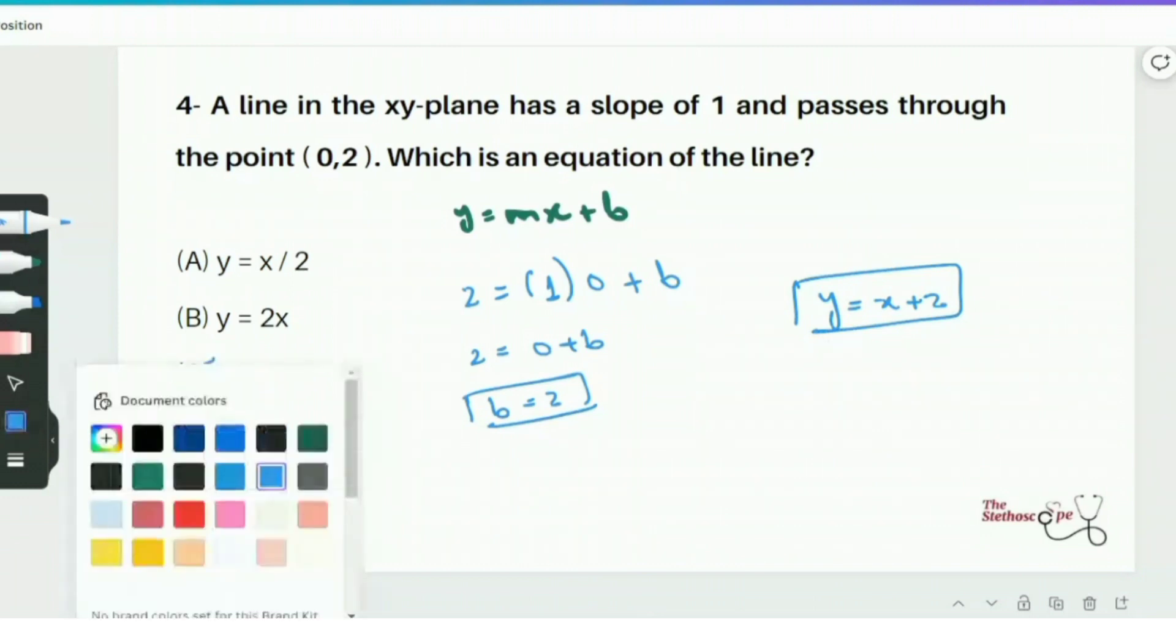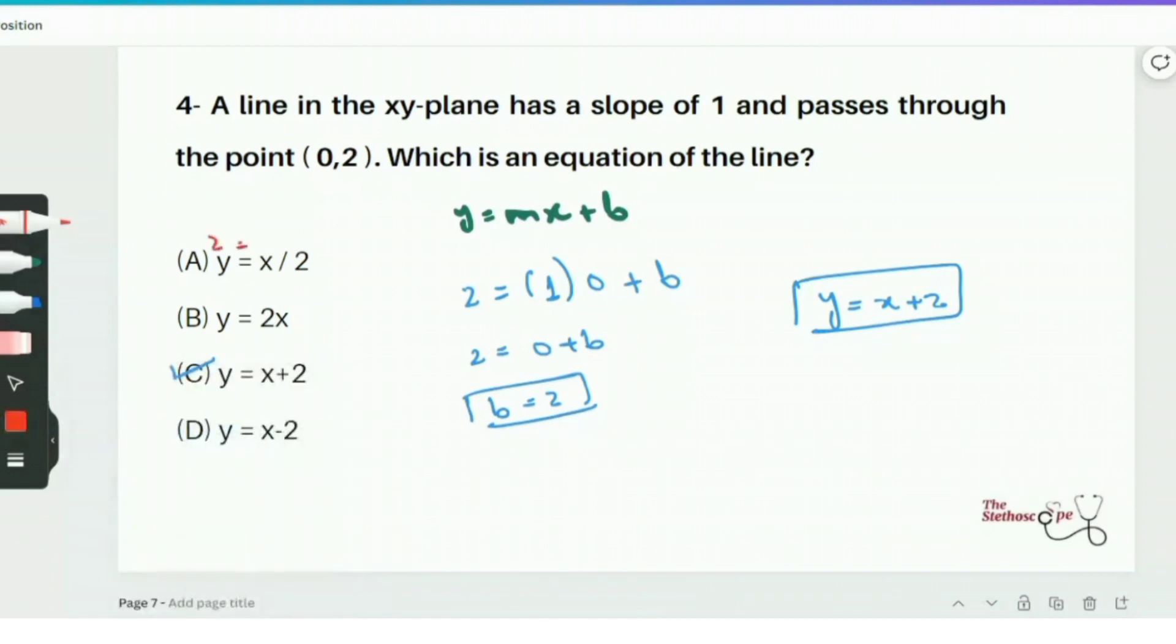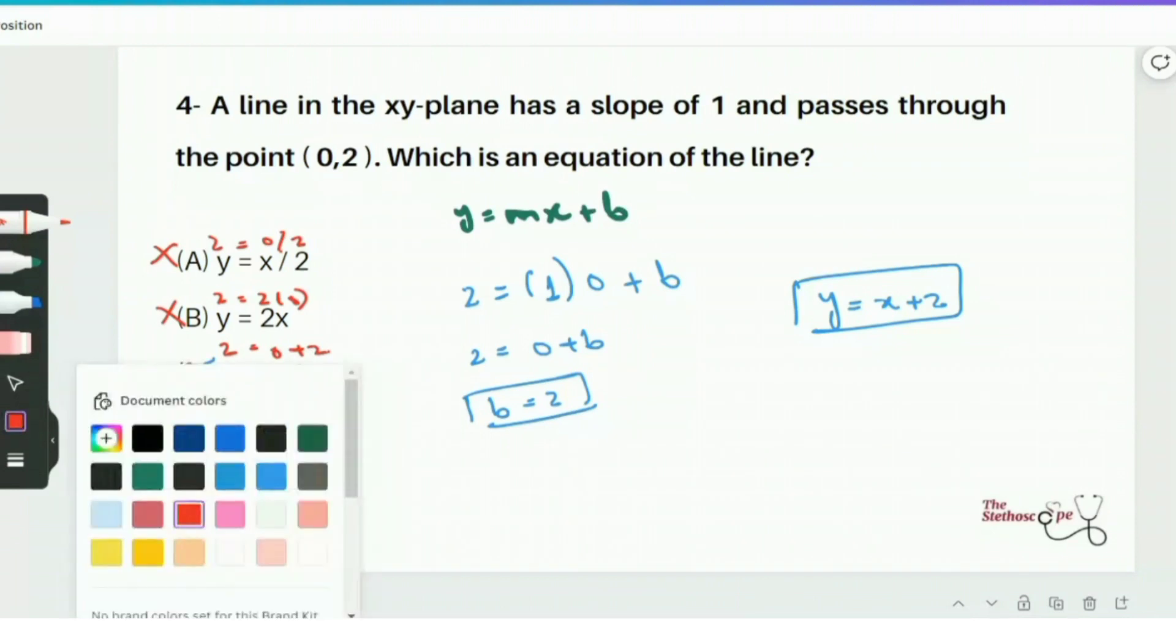Let's go ahead and double check by plugging 0 to all of these options. So 2 equals 0 over 2. This leads us to infinity. So this is wrong. Then we have 2 equals 2x. That's not equal. So it's wrong. Then we have 2 equals 0 plus 2. This equation satisfies. So yes our answer choice is option C.